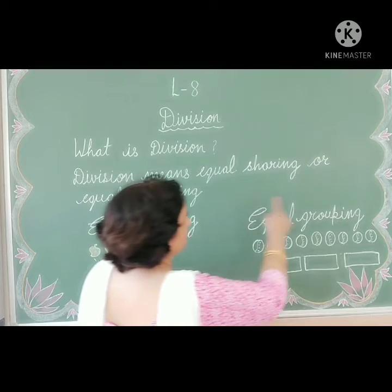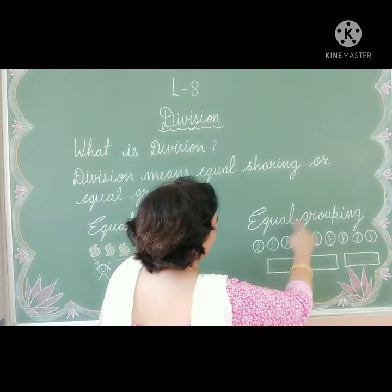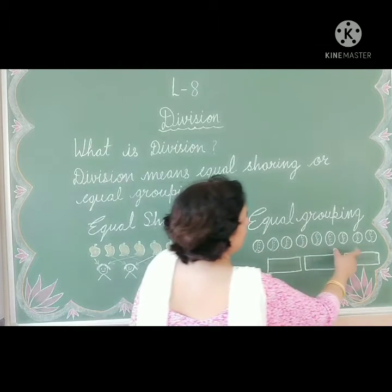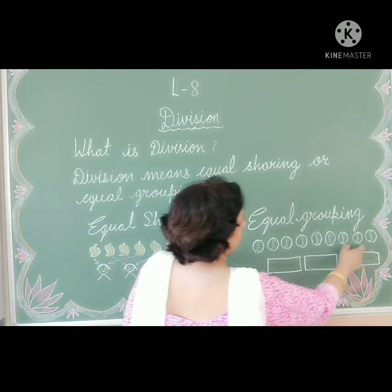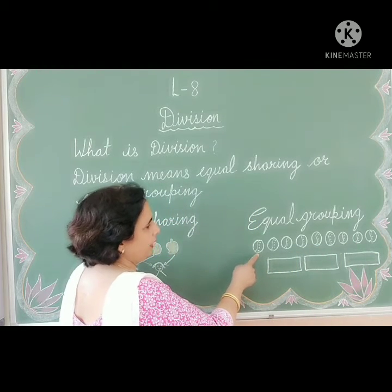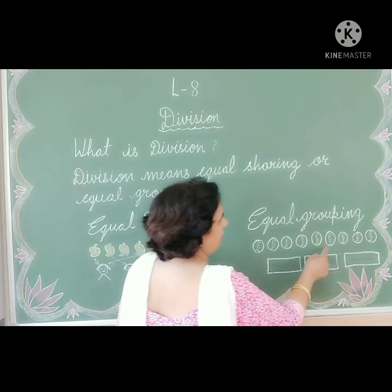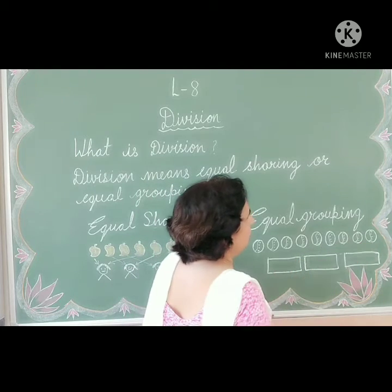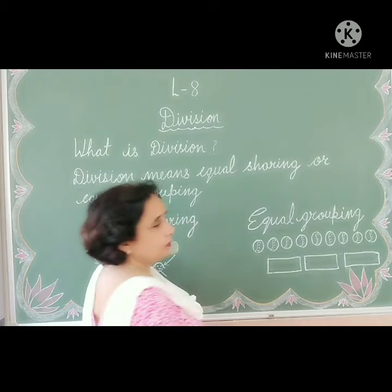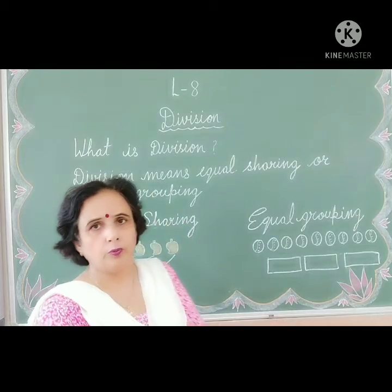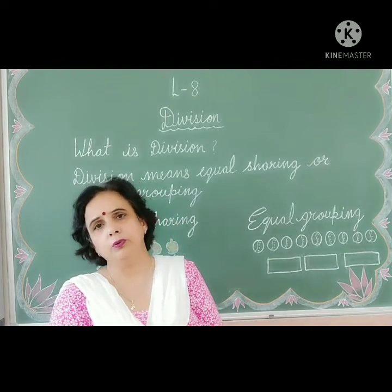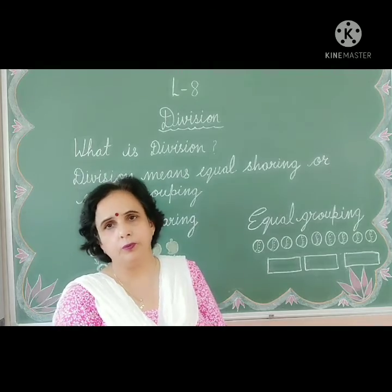Now the second example: we make three groups of nine boxes. We have seen here nine boxes — one, two, three, four, five, six, seven, eight, nine. Here we have seen three groups. Now we divide nine balls into three groups.